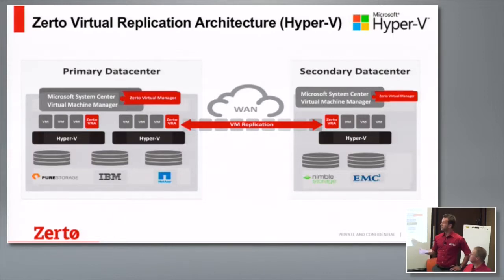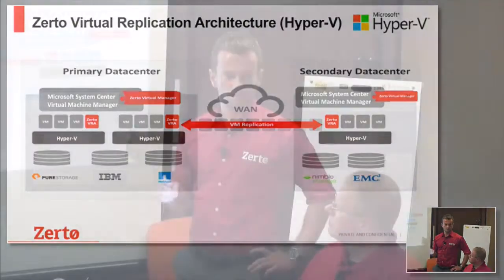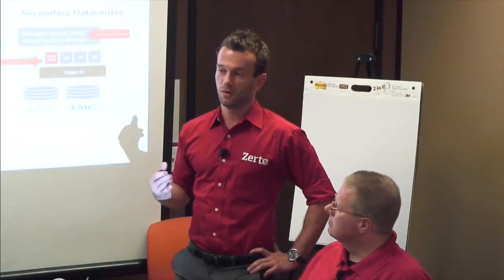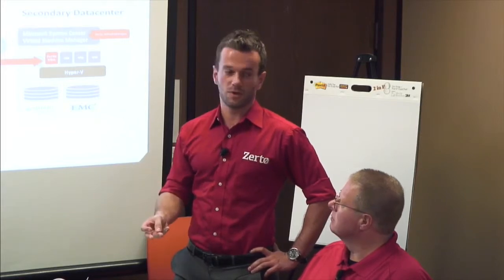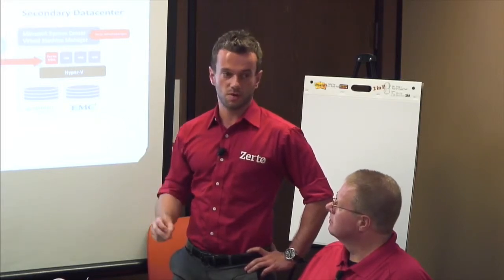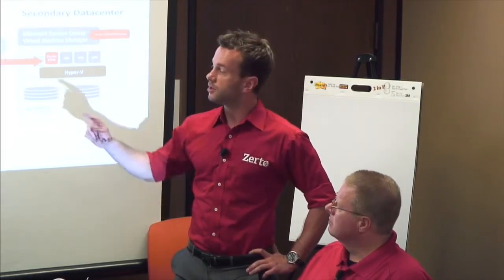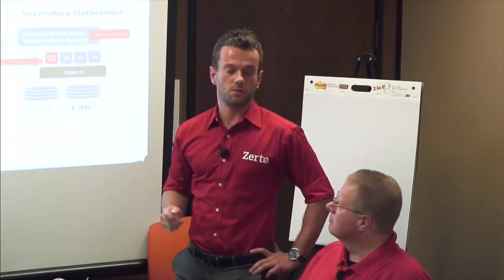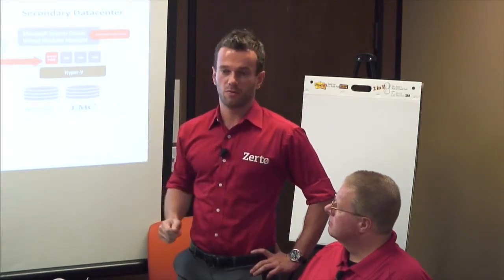Once you've done that, from the Zerto Virtual Manager interface the next step is to deploy our virtual replication appliances. Exactly as in VMware, it's a small custom build of Debian Linux — one vCPU, three gigabytes of RAM, twelve gigabytes of disk space — and you deploy one to each Hyper-V host that you want to replicate from and to.